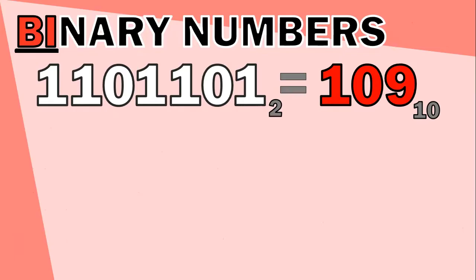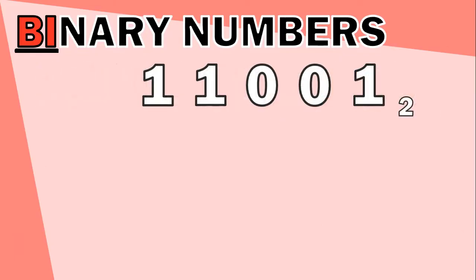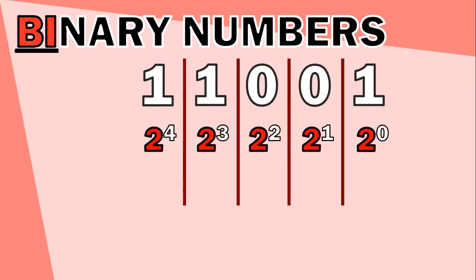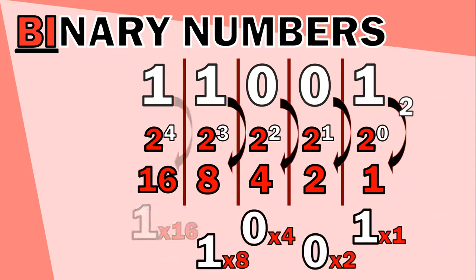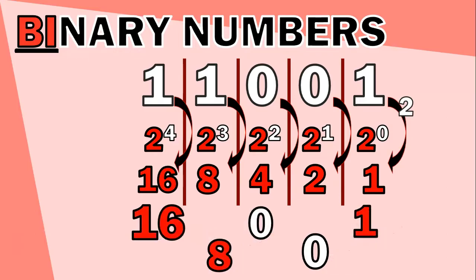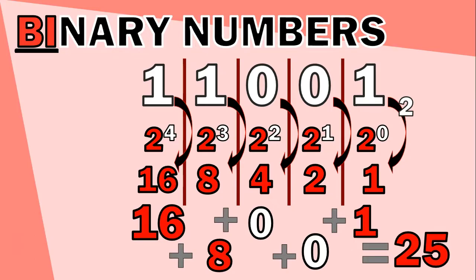Let's take another example: 11001 in binary. The columns starting from the right are 2⁰, 2¹, 2², 2³, 2⁴. We multiply each digit by its column value: 1×1, 0×2, 0×4, 1×8, 1×16. The products are 1, 0, 0, 8, and 16. Adding those together: 16 + 8 + 1 = 25. So 11001 in binary equals 25 in decimal.